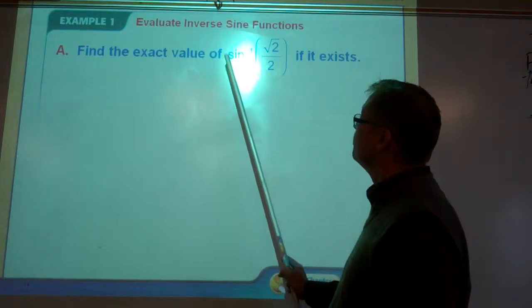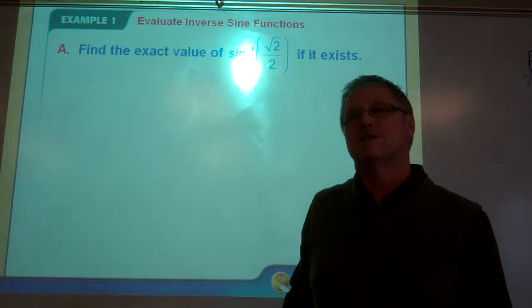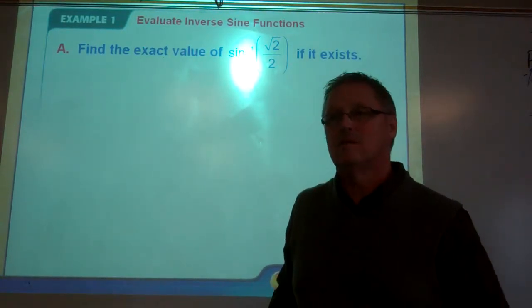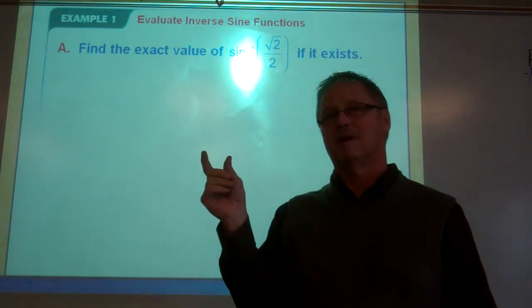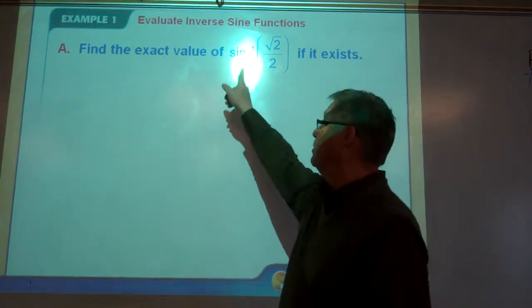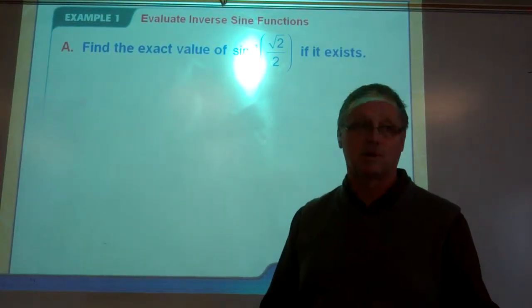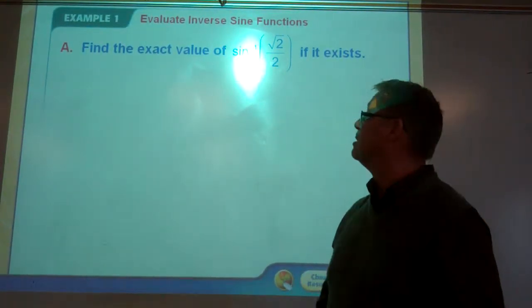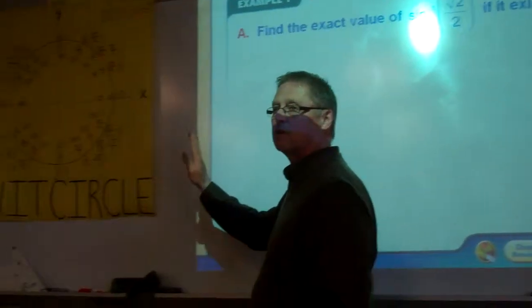This little symbol right here, sine to the minus 1, means the same as arcsine. There's not enough room on your calculator for a button that would say arcsine. So they do that. But it's like the number whose sine is square root of 2 over 2. Well, let's pan over here to the unit circle.